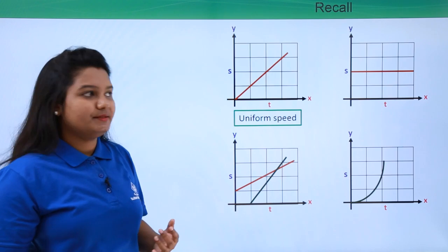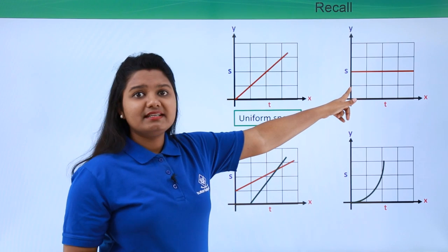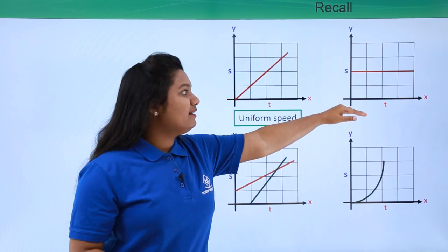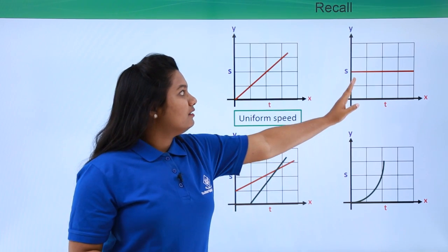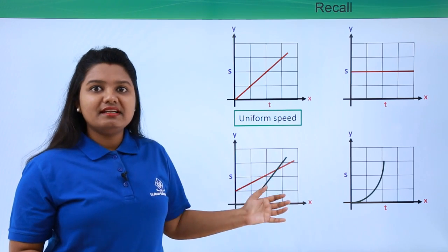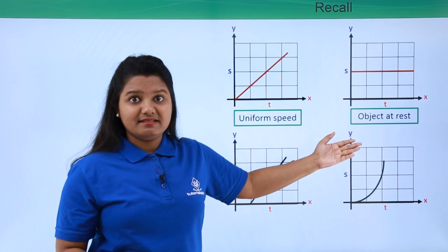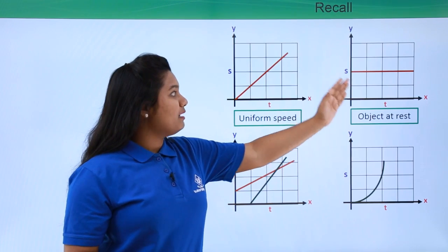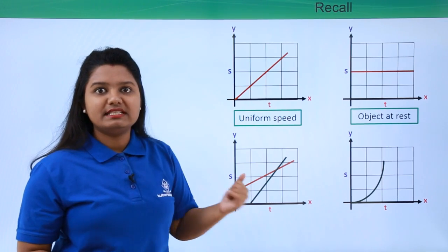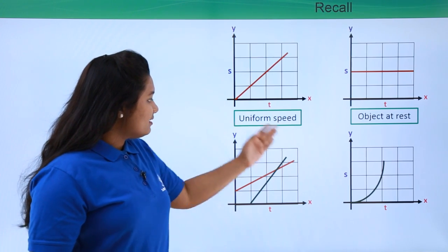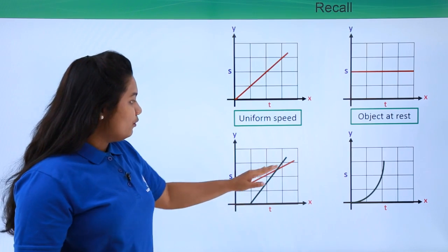Moving on to the second graph — this graph is also a straight line, but it is exactly parallel to the x-axis or the time axis. Here we can see that the distance covered by the body is not increasing with time at all, so we can say that the body is at rest. Whenever a body is at rest, its distance-time graph is a straight line parallel to the x-axis.